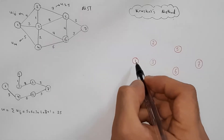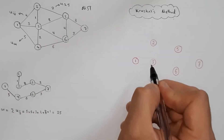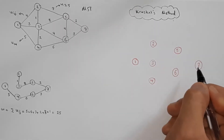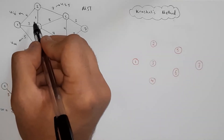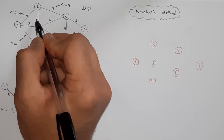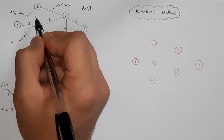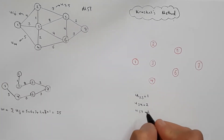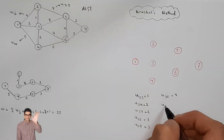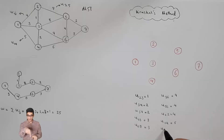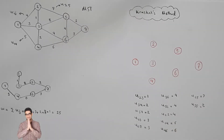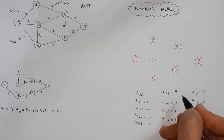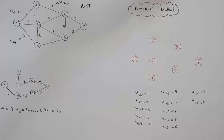First, you should draw all the nodes. For example, this is node 1. So first of all, we draw all the nodes: 1, 2, 3, 4, 5, 6, 7 — we have 7 nodes. After that, you should sort the weights in ascending order. For example, U23 with weight 1 is the minimum weight. So you sort the weights in ascending order, and then you draw lines in this order — respectively.